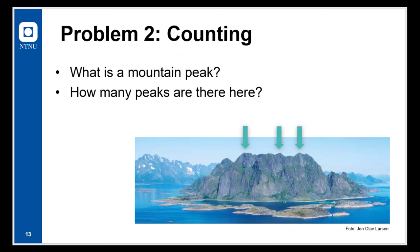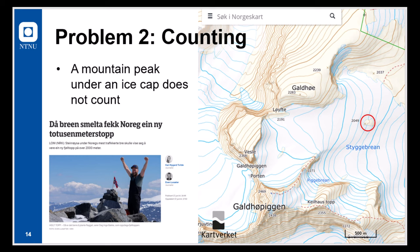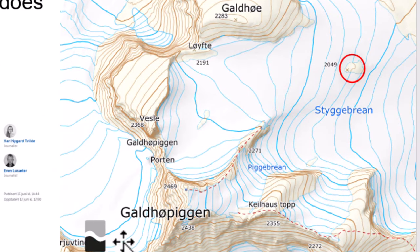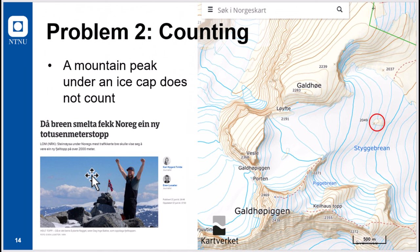A second problem related to counting. For instance, what is a mountain peak? And this is a photo showing a mountain and it has several peaks. So how many peaks should you be counting here? Also related to counting is that a mountain peak, per definition, is supposed to be visible. So if it is under an ice cap, it does not count. There are many who are collecting numbers of peaks above 2,000 meters. And Galdhøpiggen is the highest mountain in Norway and one which is very attractive to reach. And some few years ago, because of global warming and the melting of the glaciers, this little peak here became visible. And it's about 2,000. So it's now being counted as one of the peaks in Norway above 2,000 meters. So Norway has got a new 2,000 meter peak.